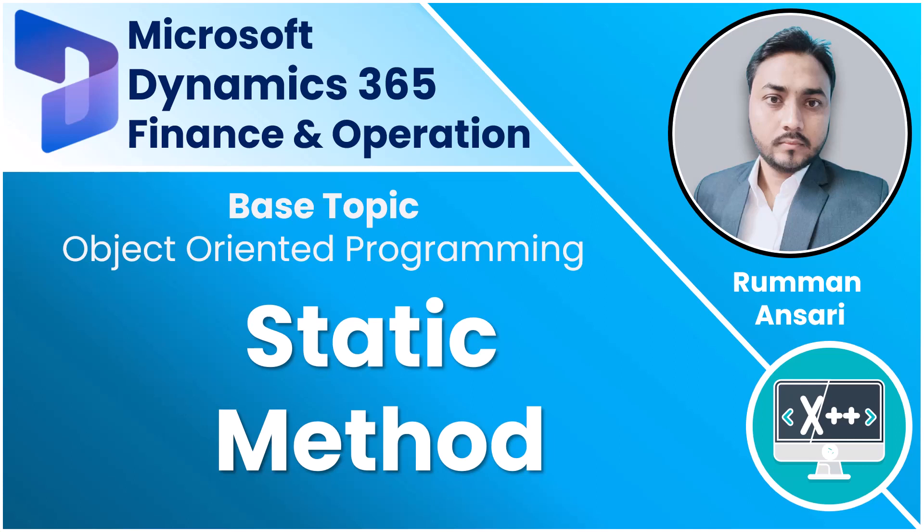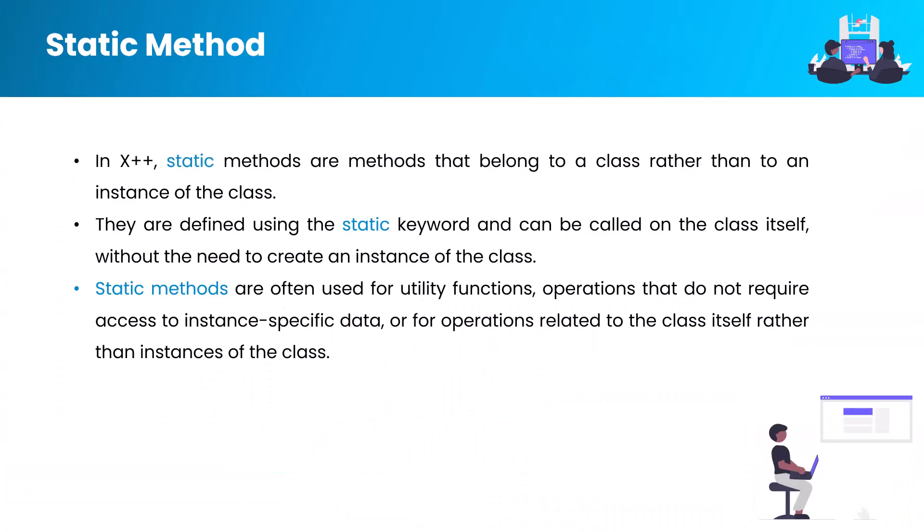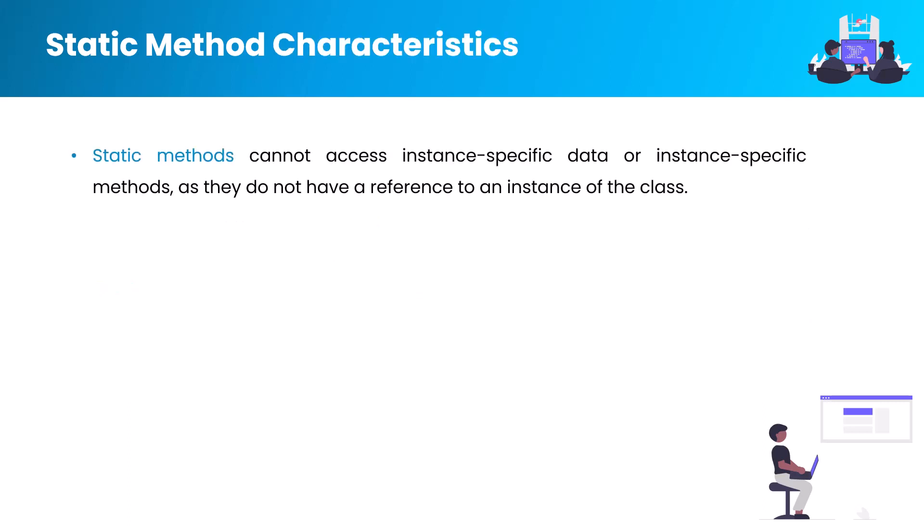Hello, welcome back again. We are talking about the static method. We already talked about what a static method is and how we can create and run a static method — we have seen that in the previous video. Now we'll talk about a few characteristics of the static method. The first point: a static method cannot access instance-specific data or instance-specific methods, as they do not have a reference to an instance of the class. Let's try to justify this statement.